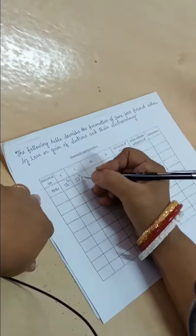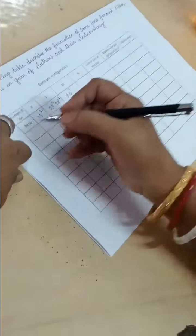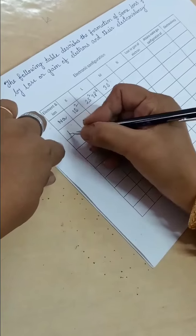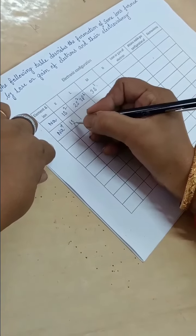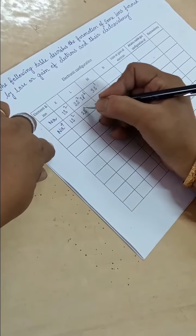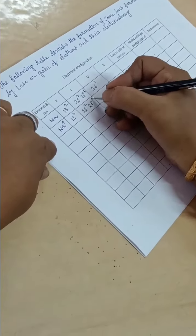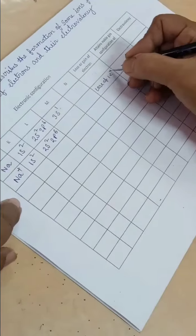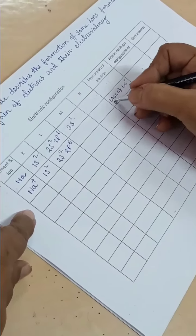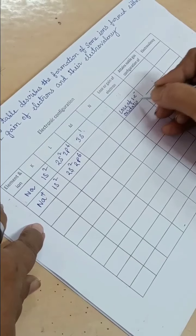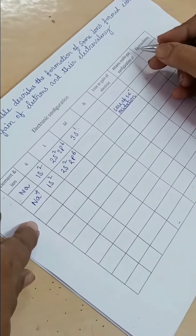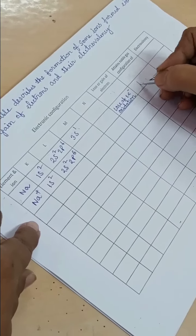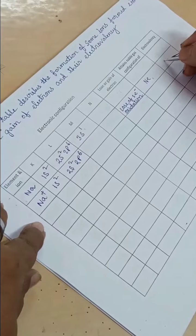Sodium: 3s1. Sodium plus: 1s2, 2s2, 2p6. Loss of one electron, oxidation, attains noble gas configuration of neon, and its electrovalency is 1.